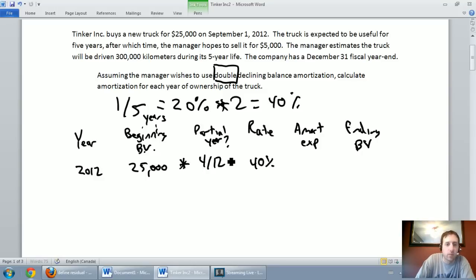My amortization expense is 25,000 times four twelfths times 40%. Let's crunch that number: 25,000 times four divided by 12 times 0.4, and I get 3333. After I've done that, what's the value of my asset according to my records? 25 grand I paid for minus the 3333 I've amortized off of it. 25 minus 3333 is 21667. So 2012 is in the bag.